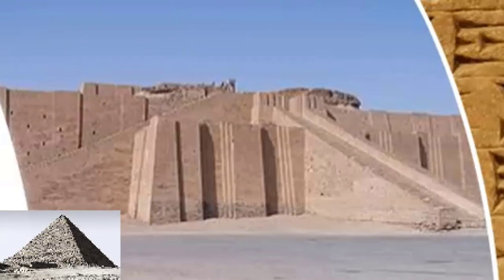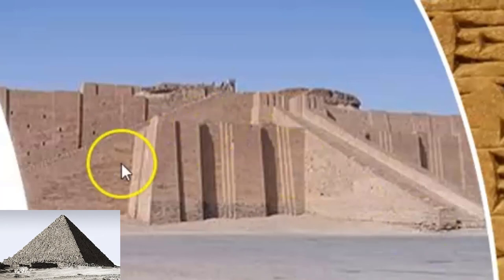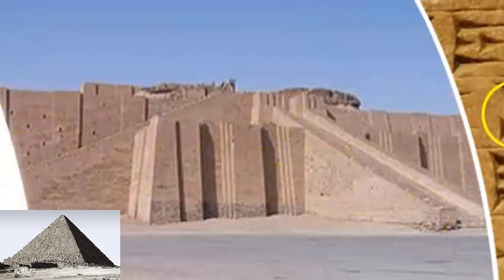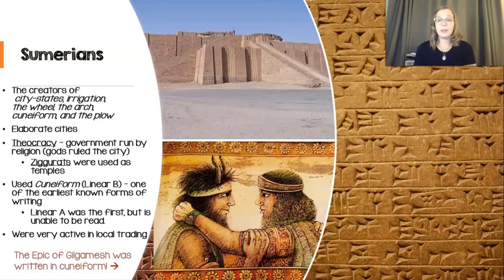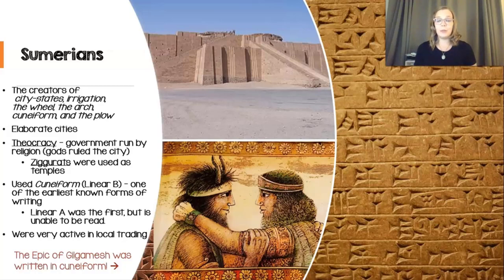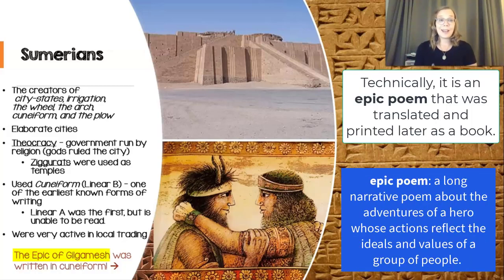A ziggurat is similar to a pyramid, but you'll notice that while part of it looks kind of like a pyramid, the rest is more square — so it's a little bit different. These are some of the big claims to fame for the Sumerians. A lot of that stuff is still used today. One other interesting thing is that their script, cuneiform, was used to write a book called the Epic of Gilgamesh, which you can actually buy at the bookstore nowadays.